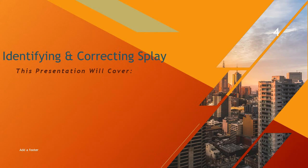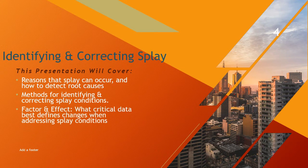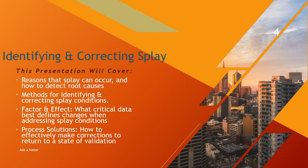This presentation is going to cover reasons that splay can occur and how to detect root causes. We will also look at methods for identifying and correcting splay conditions. We're going to look at the factor and effect — what critical data best defines changes when addressing splay conditions — and also process solutions: how to effectively make corrections to return to a state of a validated process.